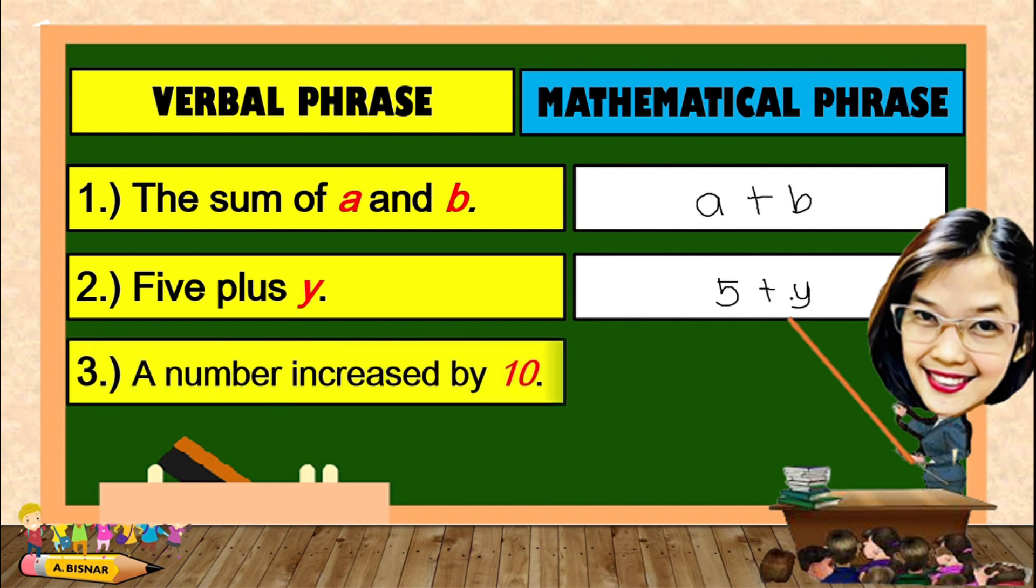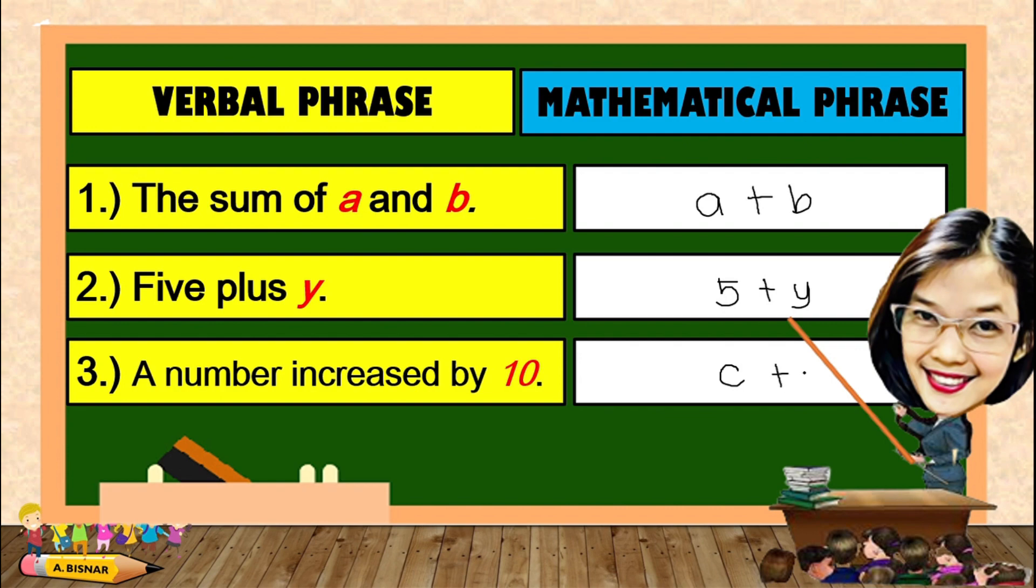Another, a number increased by 10. However, in here, it doesn't indicate what number is it, which means we can use other variables. Say for example, let us use C. A number C increased by 10.